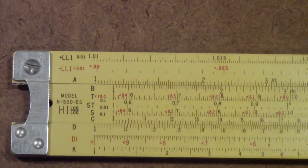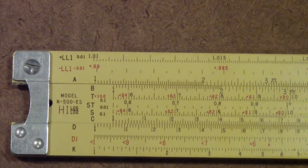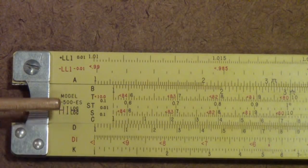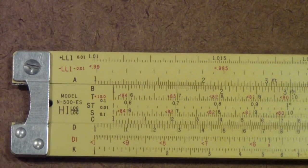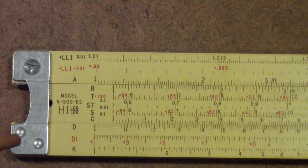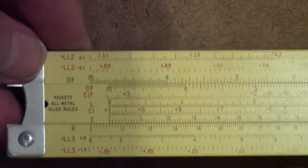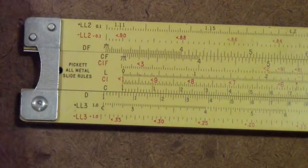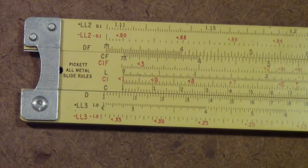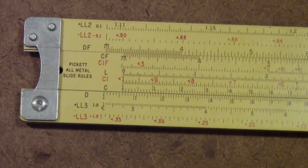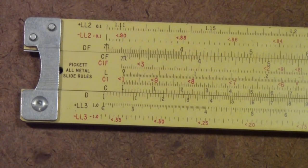This one was a rather special Pickett rule. It's called the High Log Log. It's the N500 ES. The High Log Log was the first rule that I know of that Pickett made that had a relatively complete set of Log Log scales. In other words, scales that went down to the small enough numbers and up to the high enough numbers that it was really useful in engineering.